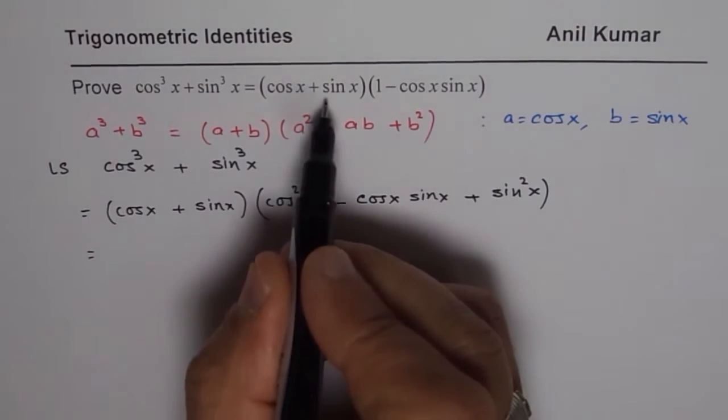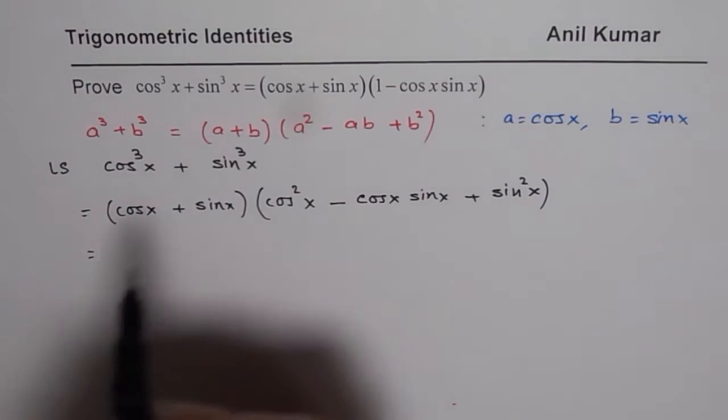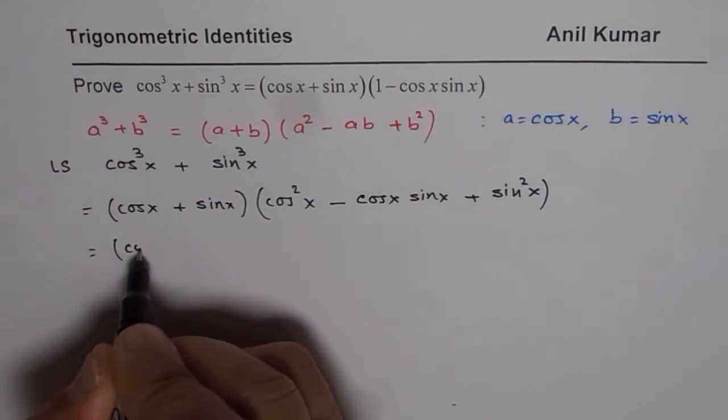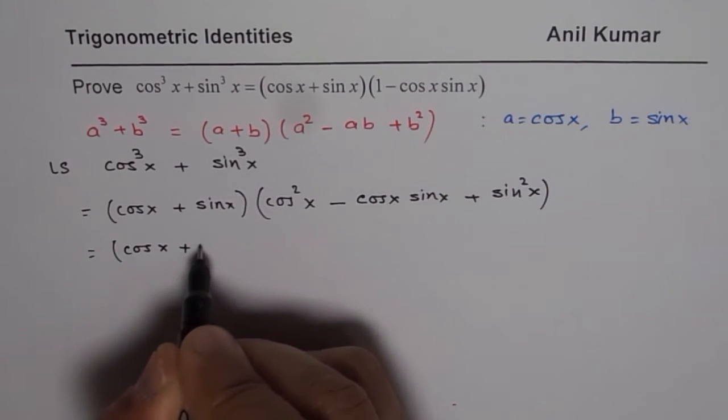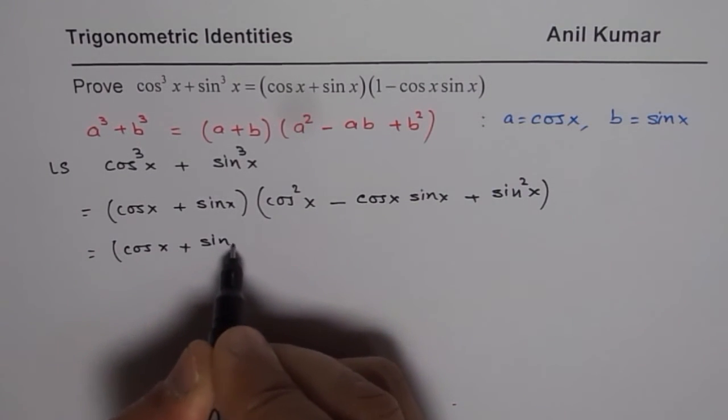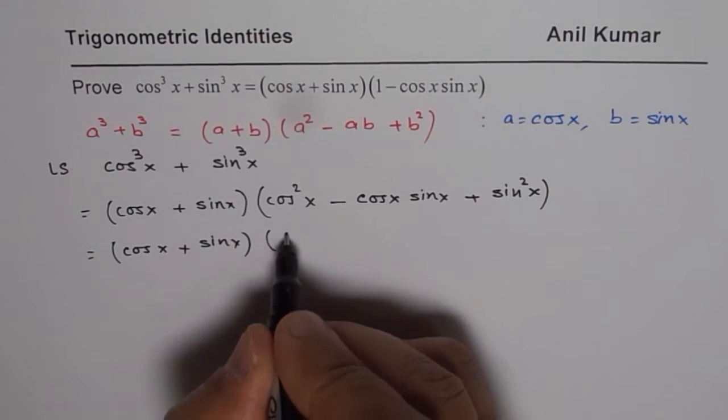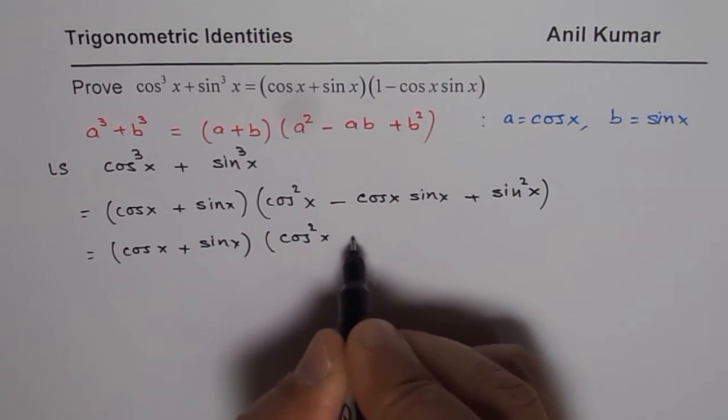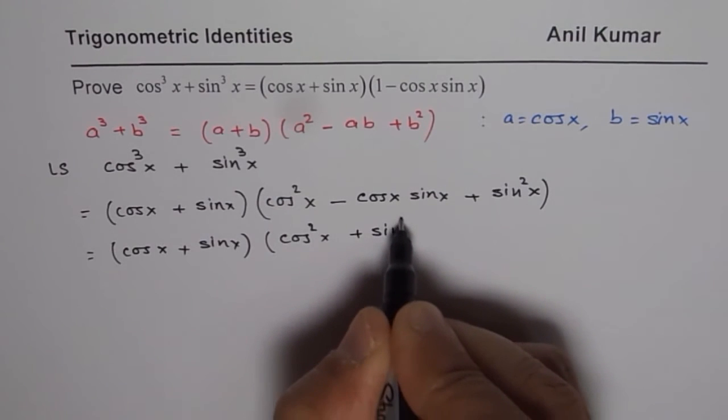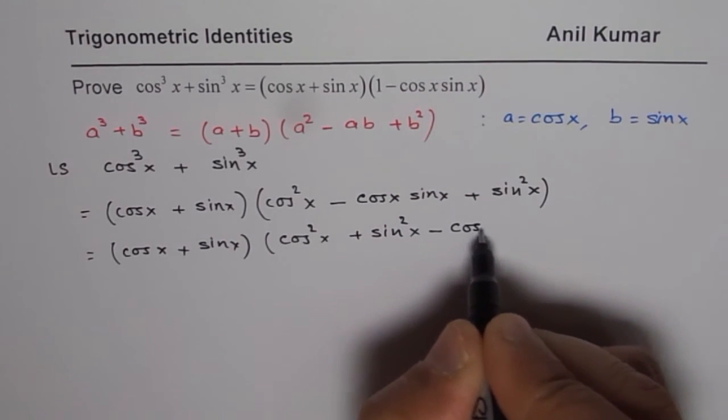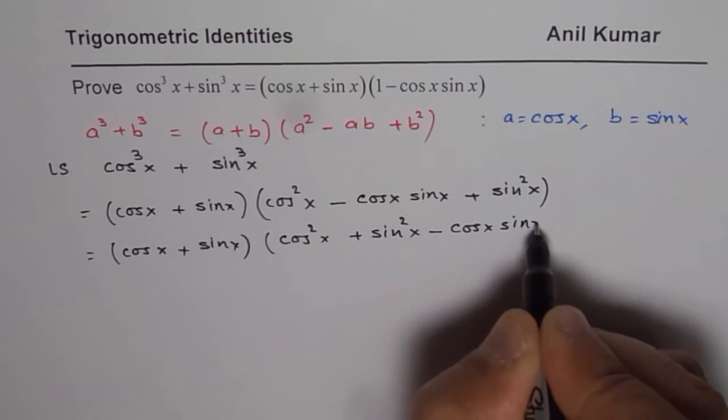You can now observe that we have got already one of the factors which is same as right side. It is good to always keep a view of what we need to prove this identity as. Now here cos²x + sin²x is 1. So let us combine them. Cos²x + sin²x, so we just rearranged minus cosxsinx.